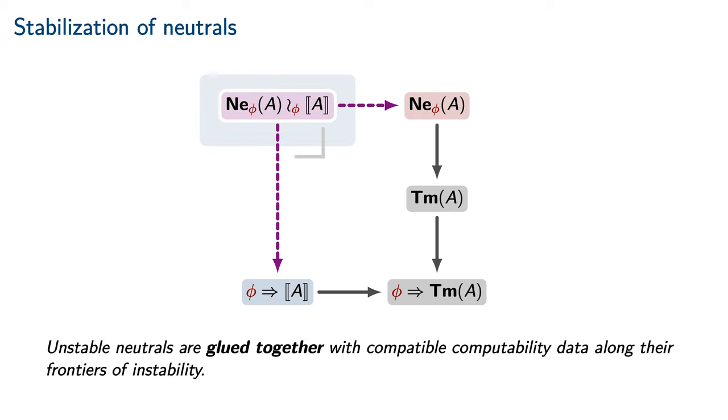This is achieved by taking a pullback that glues an unstable neutral form together with partial computability data along its frontier of instability.